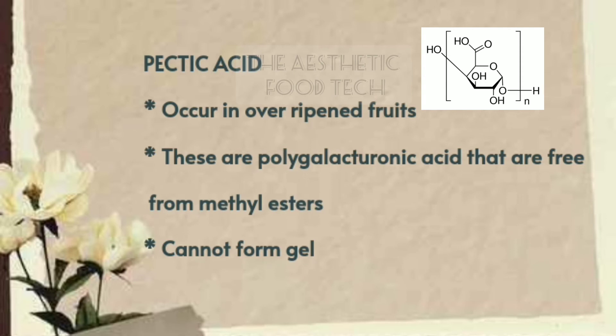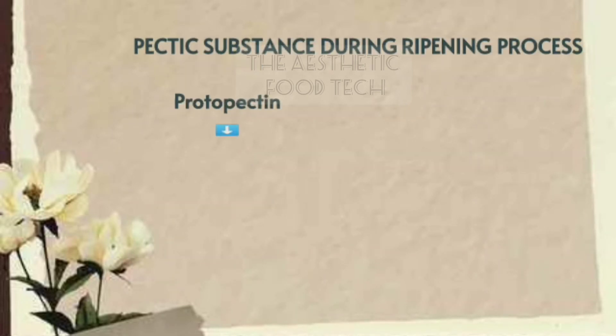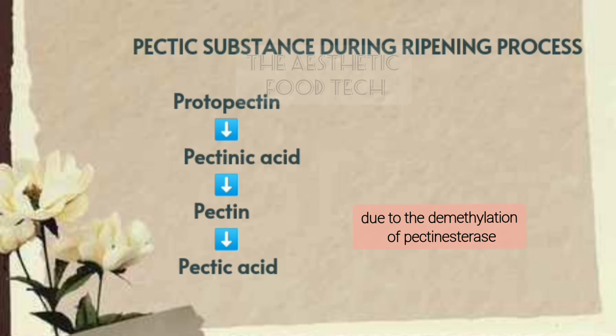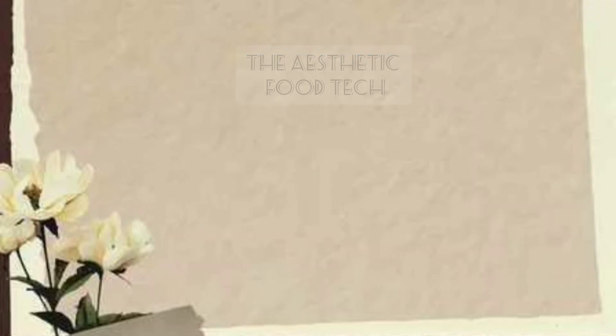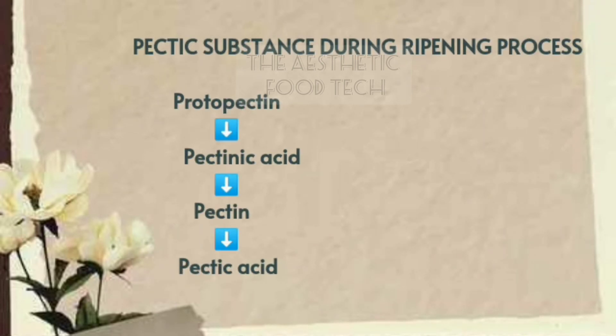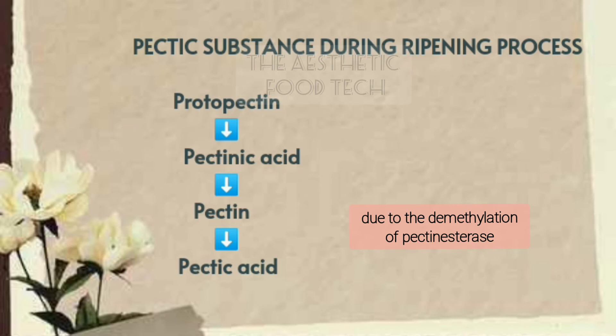Pectic acid mainly occurs in over-ripened fruits. They are polygalacturonic acids free from methyl esters. Their main peculiarity is that they cannot form gel. During ripening: raw fruits contain protopectin, which converts to pectinic acid upon slight ripening, then to pectin at optimum ripening, and finally to pectic acid when over-ripened. This is the flowchart of pectic substances during the ripening process.